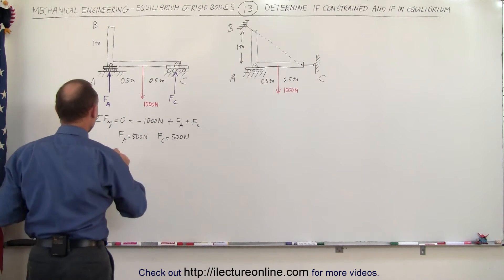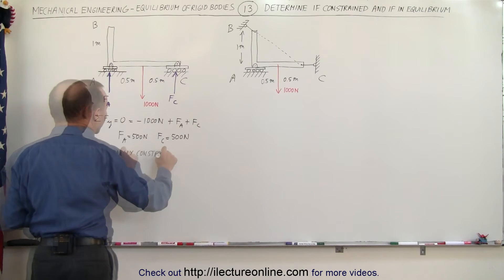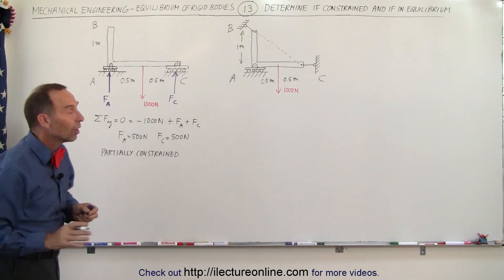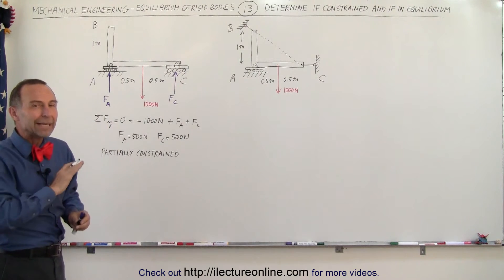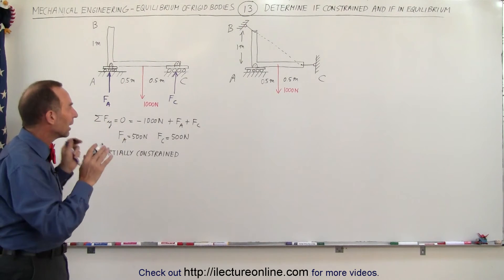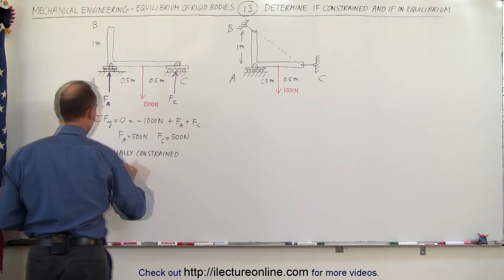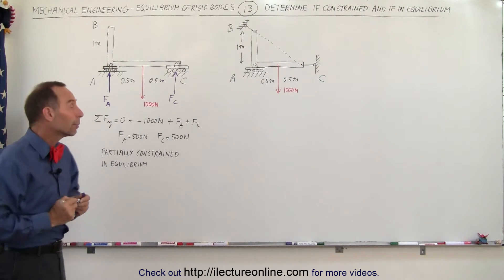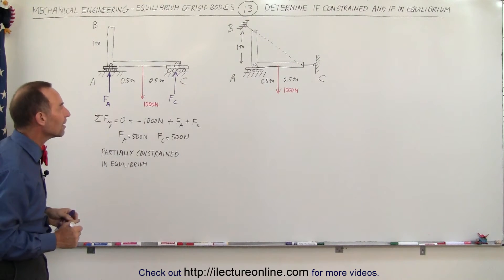Therefore we can say this system is partially constrained. It is currently in equilibrium — meaning unless another outside force acts upon it there will be no motion. The forces are determinable, so we are able to determine the forces at A and at C.